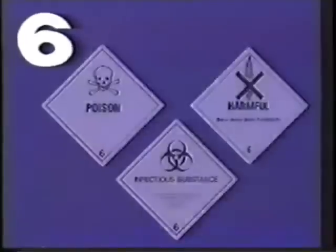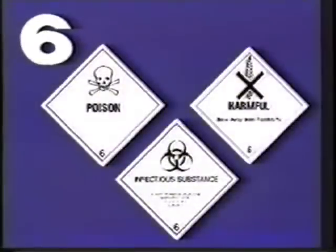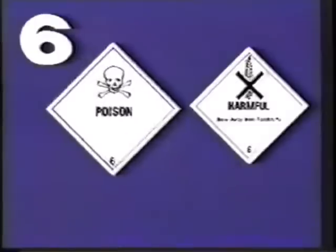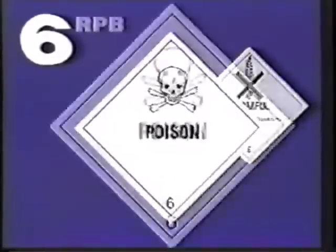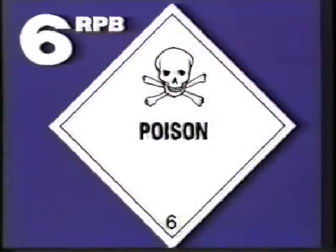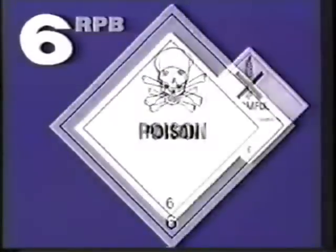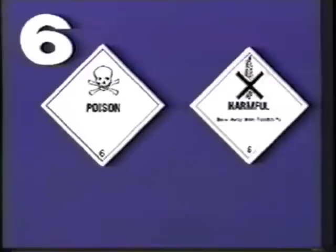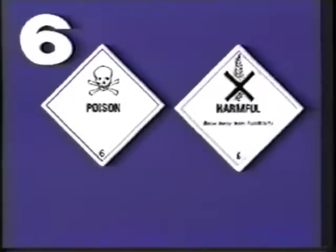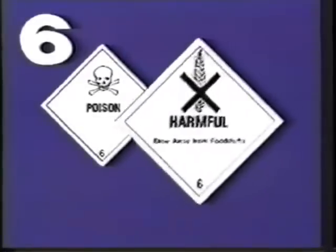The dangerous goods in class 6 are divided into two subclasses: poisons and infectious substances. The label for subclass 6.1 indicates danger. Very poisonous substances carry this label, while less poisonous substances have this label.